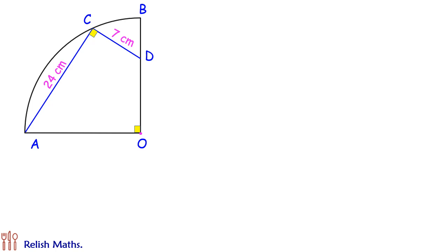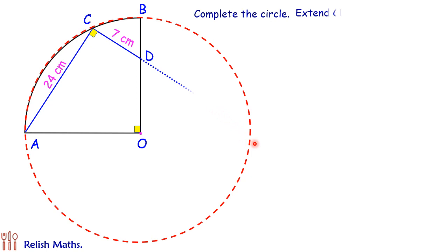Let's see the solution. First, we'll do some construction. Complete the quadrant into a circle and extend line segment CD so that it meets the circle at point E.